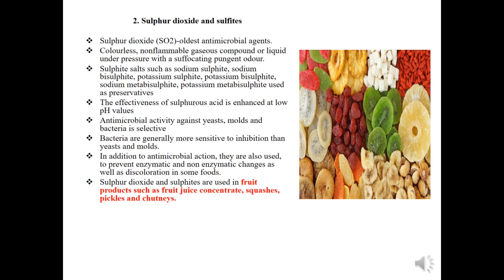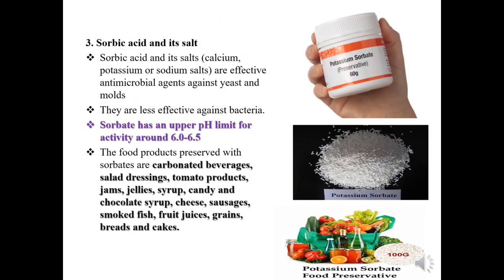Sulfur dioxide and sulfates are mainly used in fruit products such as fruit juice concentrate, squashes, pickles, and chutneys, especially in low-acid foods. Next, sorbic acid and its salts — calcium, potassium, or sodium salts — are effective antimicrobial agents against yeast and molds. They are less effective against bacteria. Sorbic acid has an upper pH limit for activity around 6 to 6.5. Food products preserved with sorbic acid include carbonated beverages, salad dressings, tomato products, jam, jelly, syrup, candy, chocolate syrup, cheese, sausages, smoked fish, and fruit juices.